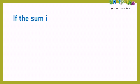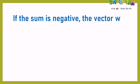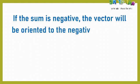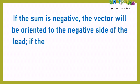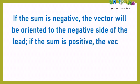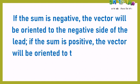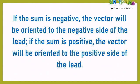If the sum is negative — meaning the summation of the waves is negative — the vector will be oriented to the negative side of the lead. If the sum is positive, then the vector line will be oriented to the positive side of the lead.